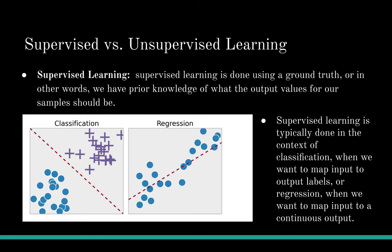Supervised learning is typically done in the context of classification — we want to map input to output labels — or regression. In both regression and classification, the goal is to find specific relationships or structures in the input data that allow us to effectively produce correct output data. Some common methods include regression, linear regression, logistic regression, classification, random forest, and bagged forest.